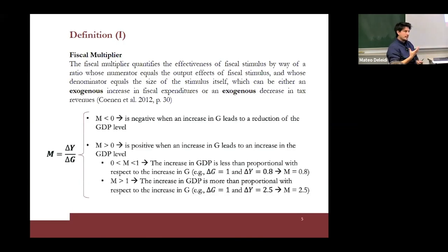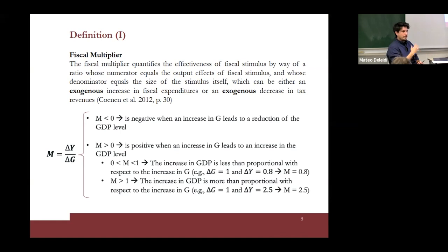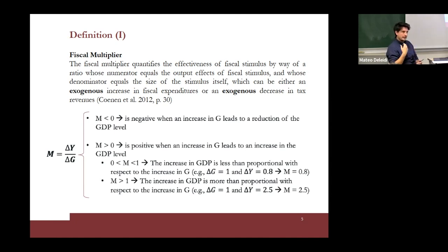What is the fiscal multiplier? The fiscal multiplier is an instrument that assesses the effectiveness of a fiscal stimulus and measures the impact of an exogenous increase in government expenditure or an exogenous decrease in taxes on GDP. The fiscal multiplier can assume several values: lower than zero, meaning an increase in government expenditure leads to a reduction in GDP, or greater than zero, meaning fiscal policy can foster economic growth.